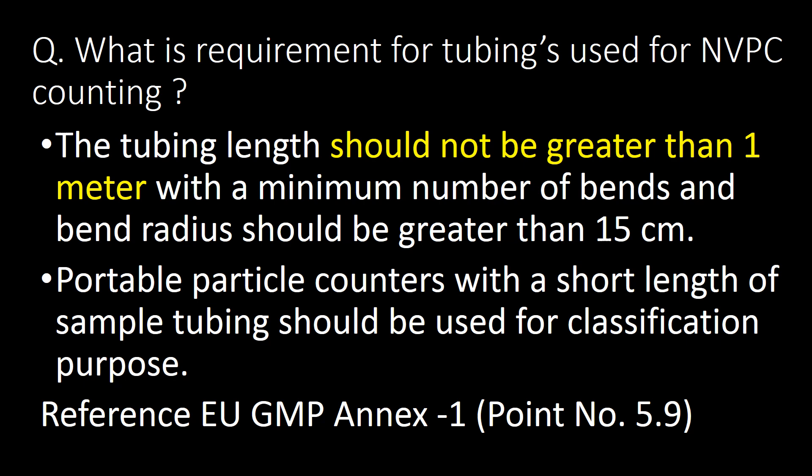What is the requirement for tubing used for NVPC counting? The tubing length should not be greater than 1 meter with a minimum number of bends, and the bend radius should be greater than 15 cm. Portable particle counters with a short length of sample tubing should be used for classification purposes. Reference: EU GMP Annex 1, Point No. 5.9.